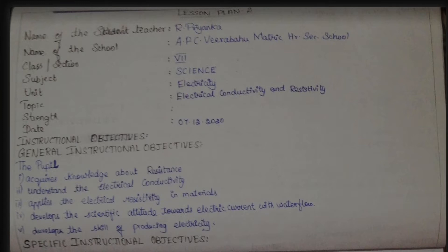The class section is level 1, the subject is science, and the unit is the electricity lesson. The topic is electrical conductivity and resistivity. We will also see how many students are in the class, and the date is mentioned. So the topic is the electricity lesson.